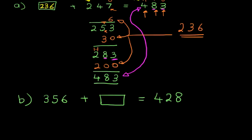So what we have here is 356 plus something equals 428. Now, what I'm going to do is start with the units. We've got six units. How many units do we need to get to? Well, we need to get to eight. Now, what number added to six is going to give us eight? The answer is two. So I'm going to write this down in the box.